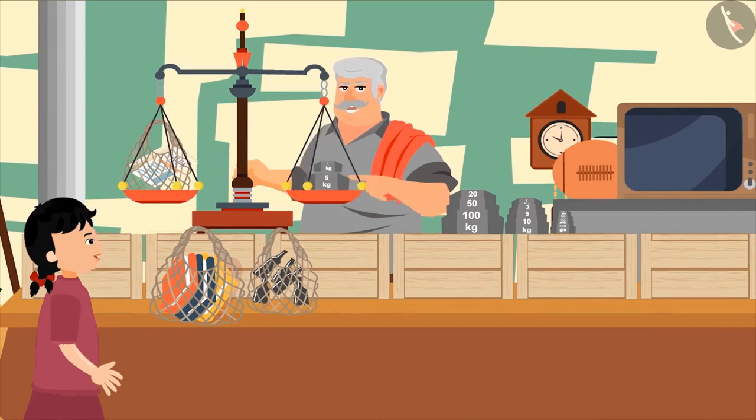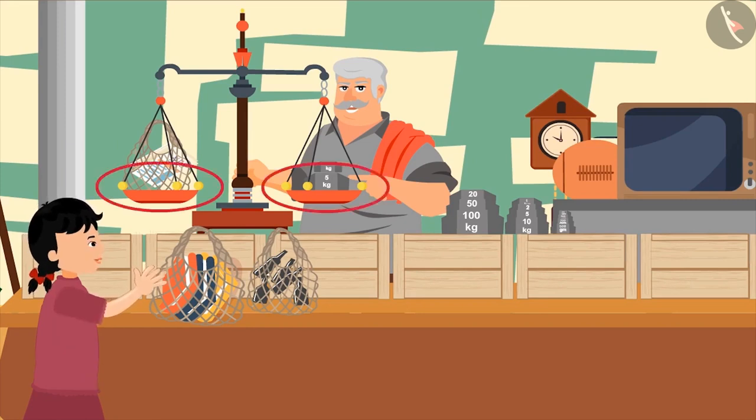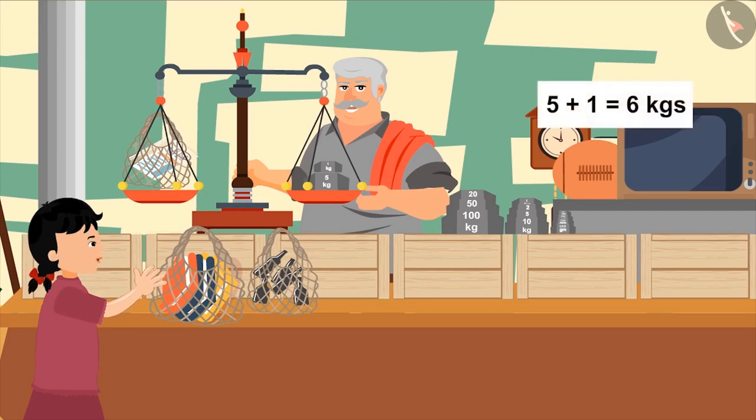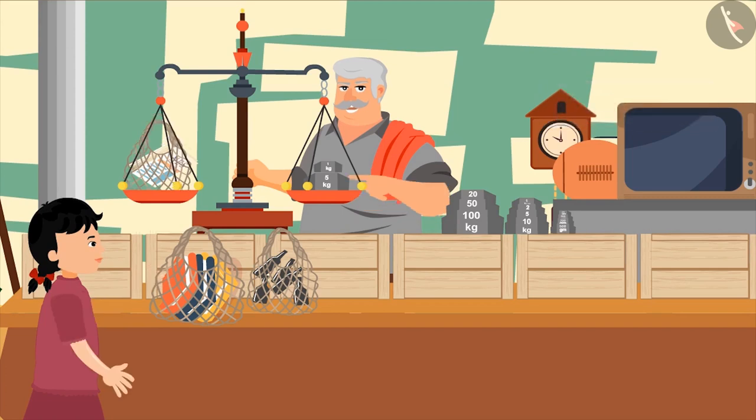Uncle, look. Now the sides are balanced and the needle also points at the center. That means, the weight of the newspapers is 5 and 1 means 6 kgs. Very good.